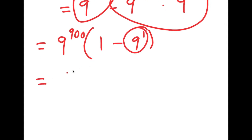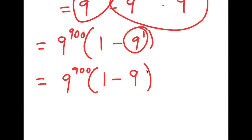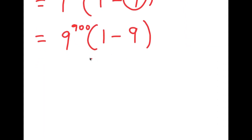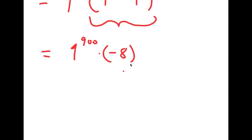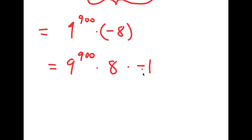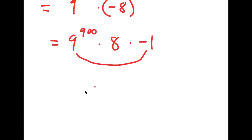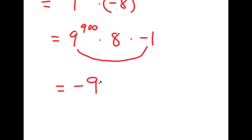9 to the power of 1 is the same thing as 9, so I get 9 to the power of 900 times 1 minus 9. Simplifying inside the parentheses: 1 minus 9 is negative 8, so I have 9 to the power of 900 times negative 8. I can rewrite negative 8 as 8 times negative 1, and multiplying negative 1 with 9 to the power of 900 gives negative 9 to the power of 900 times 8.